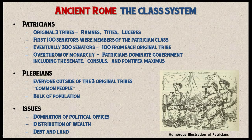The patricians could trace their ancestry to the original three tribes that founded Rome, during the time of the Roman kingdom. The first hundred senators were members of the patrician class, and eventually this would grow to about three hundred senators — one hundred from each original tribe. So the original senate during the Roman kingdom consisted of patricians only.